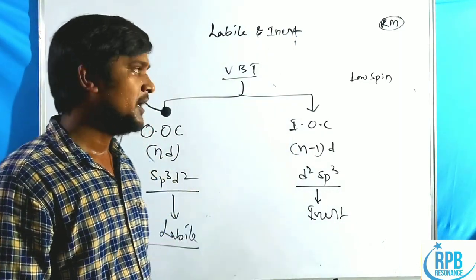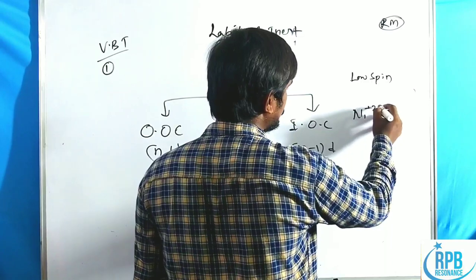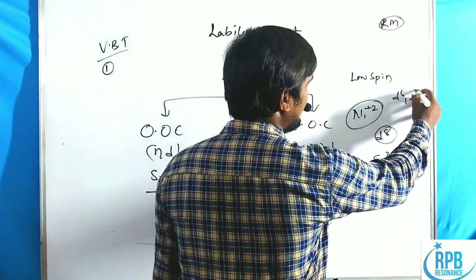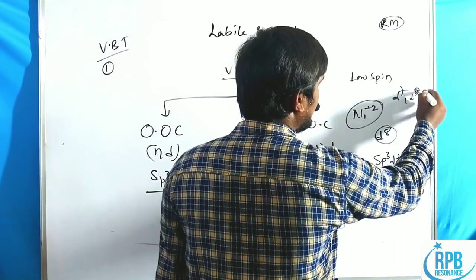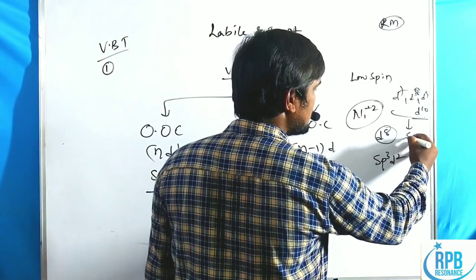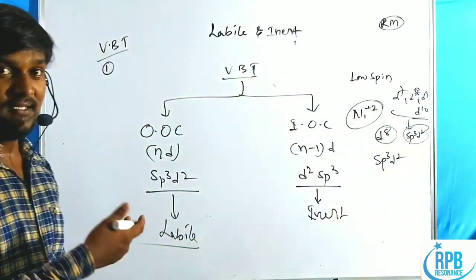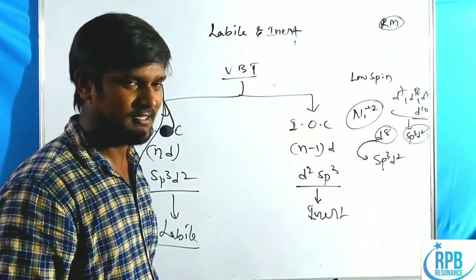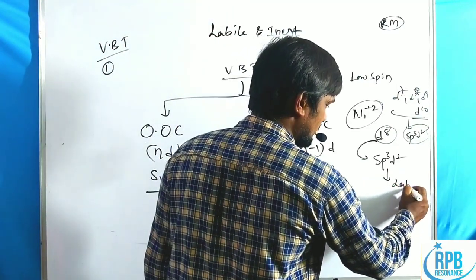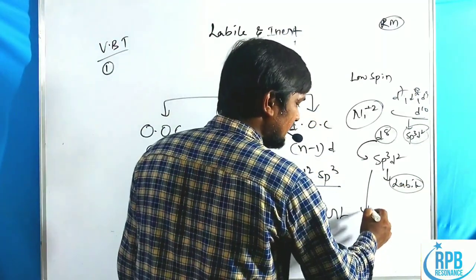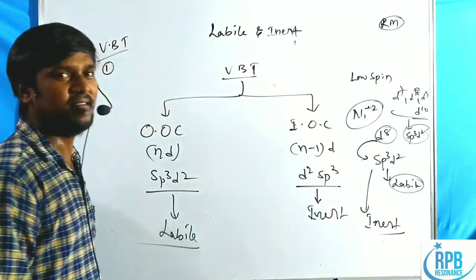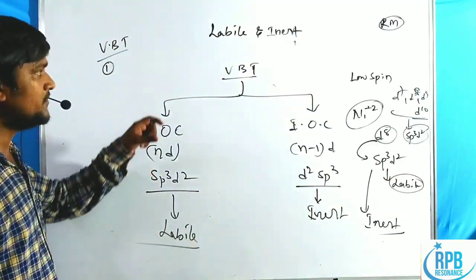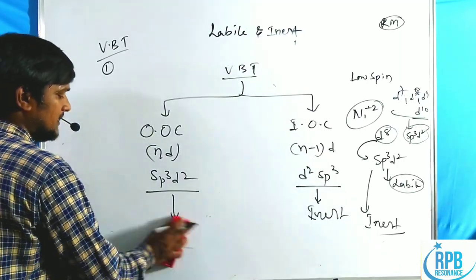Nickel +2 configuration is D8 — that means sp3d2. Even in strong field, the hybridization is sp3d2. According to VBT, D8 configuration is sp3d2, so it is labile. But experimentally, it is an inert complex. The inertness of nickel +2 D8 configuration was explained by CFT, which is not explained by VBT.